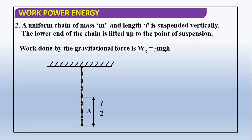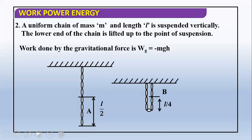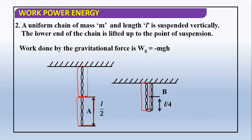So what is the final configuration? The chain is lifted — the lower end of the chain is lifted to the point of suspension, so it is like this: the lower end now touches the ceiling. What has happened is that this upper part is as it is — it has not changed.